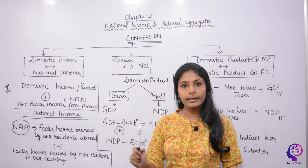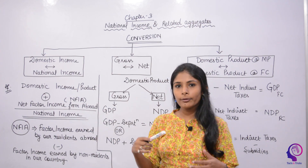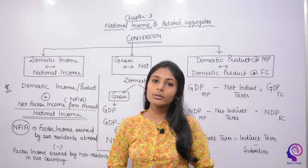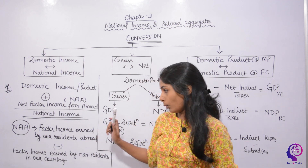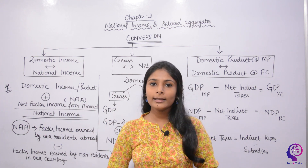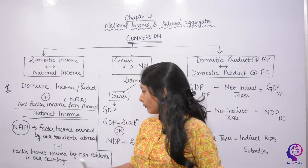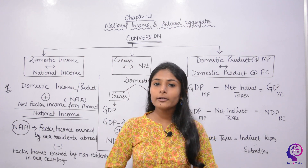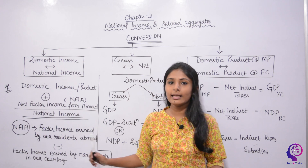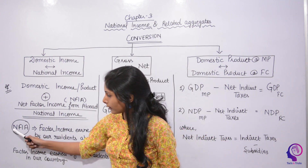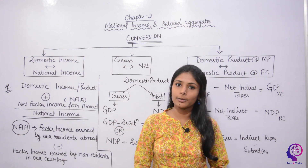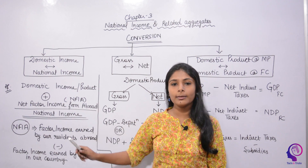If I have a domestic product, then it becomes national income when we add NFI — the net factor income from abroad. Some people live in our country and earn factor income here, but that will not be the national income of our country, so we will subtract that. The net factor income from abroad is the key difference between domestic and national concepts.